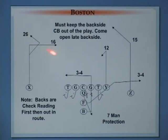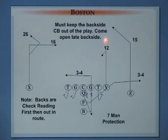Must keep the backside cornerback out of the play. Backs are checking first, then getting out — it's key that you get them out if their guy doesn't come. We're working seven-man protection to push the ball downfield. The reason we're play-action passing is because safeties are playing down on the run; we want to take advantage of that and get them over the top with the big ball on the post. If not, we'll come back down to intermediate to flat.